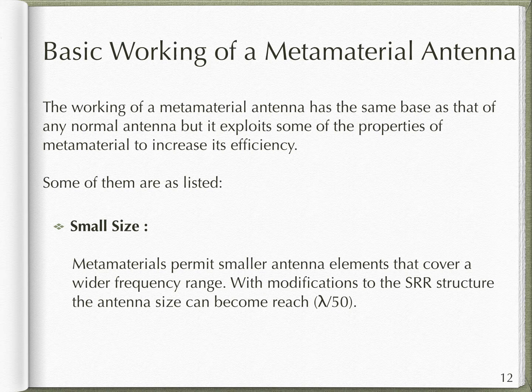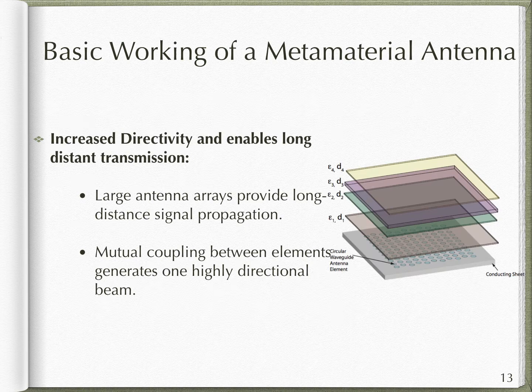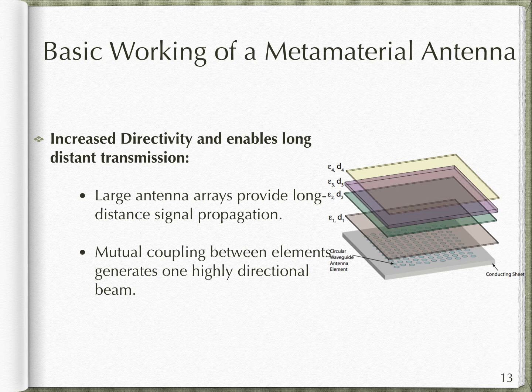With small modification to the SRR structure, the size of the antenna could be reduced to one fiftieth of the wavelength of the incident radiation. Another advantage of using a metamaterial antenna is its increased directivity, enabling long distance transmission. The radiating elements of such antennas are combined into large antenna arrays, as shown in the diagram. Mutual coupling occurs because individual antenna elements are closely spaced, which is necessary to generate a highly directional beam.